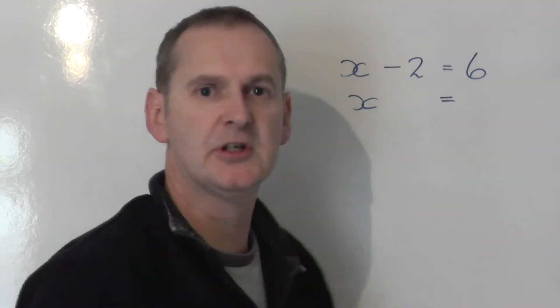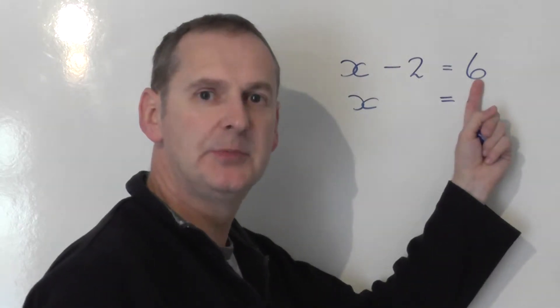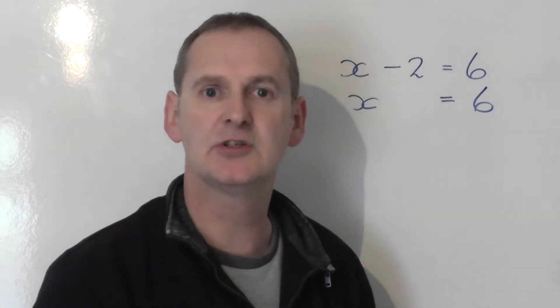So we leave the x exactly where it is on the left-hand side of this equal sign. We now collect all the number terms on the other side. The 6 is already where we want it to be, on the right-hand side. So that stays exactly in the same position and doesn't change.